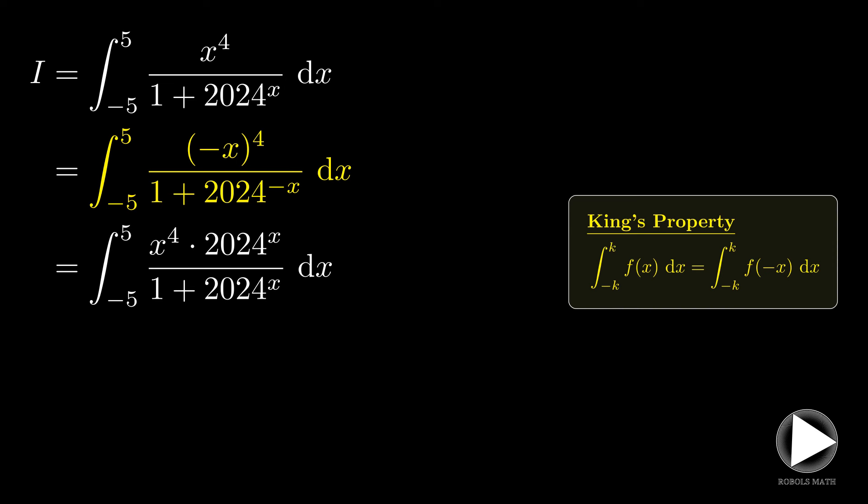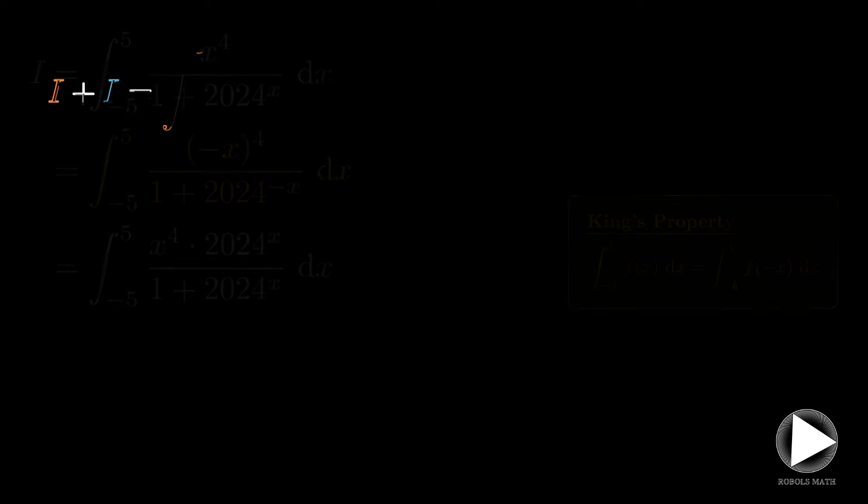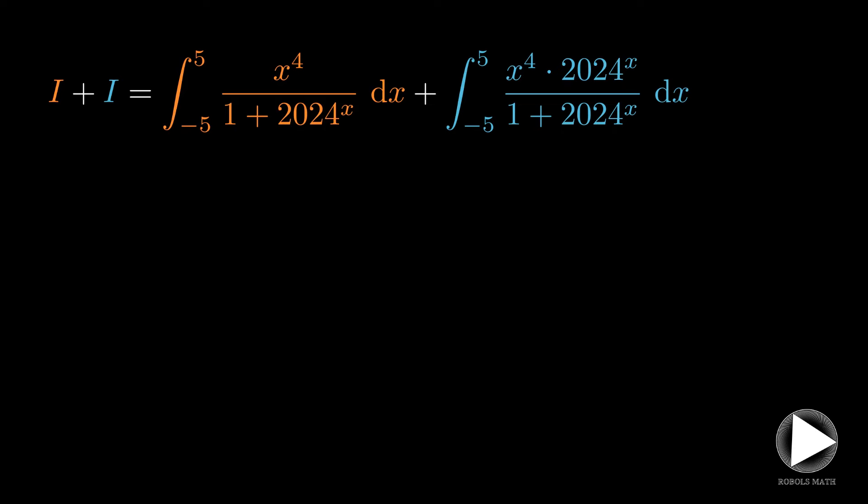We simplify the integral by applying the properties of exponents. As it is, this integral is not any easier than the original version. However, note that if we add this to the original integral, we come up with something where the denominator would cancel out.